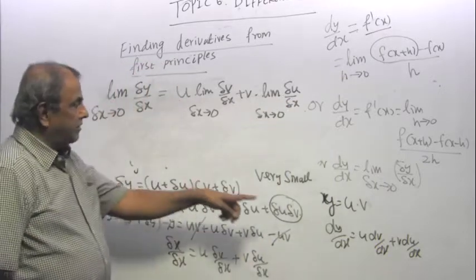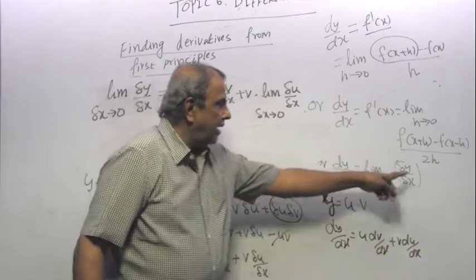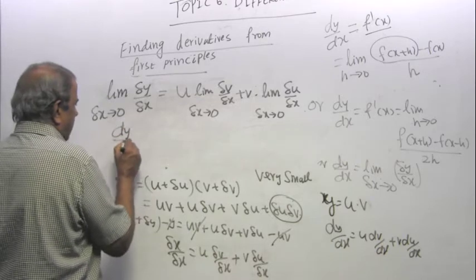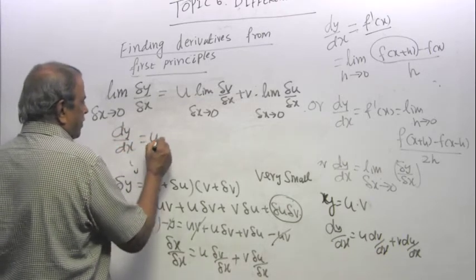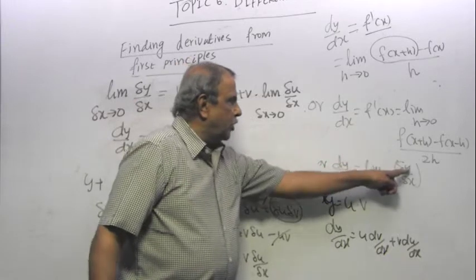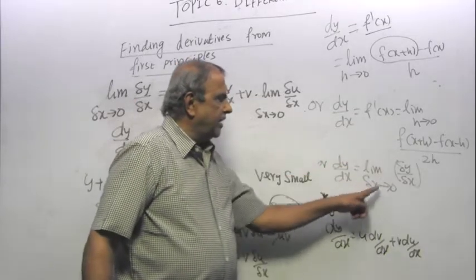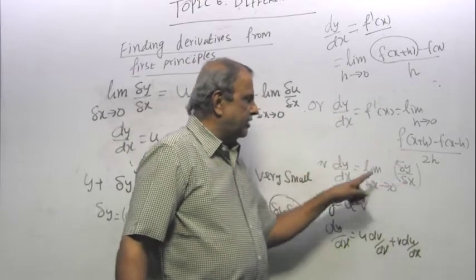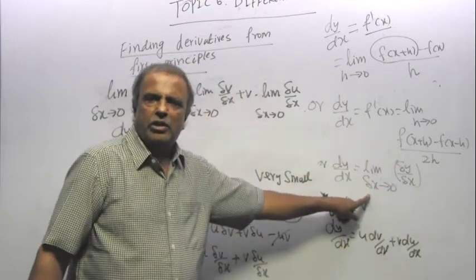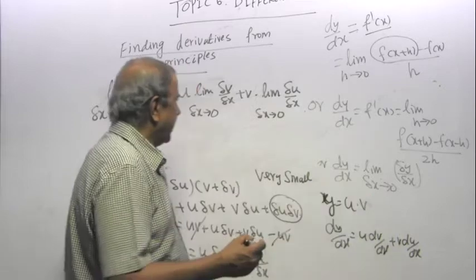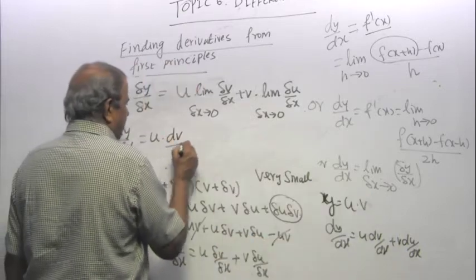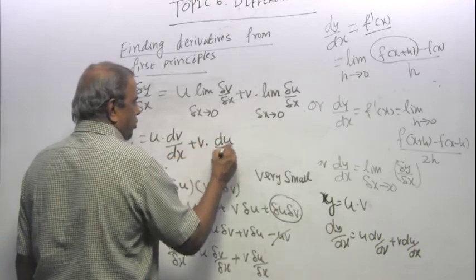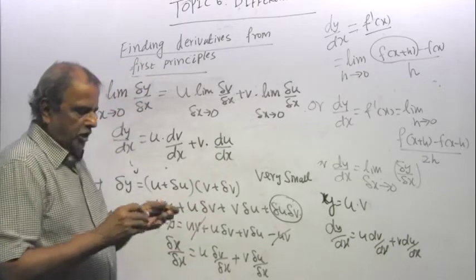So limit delta x tends to 0 is dy by dx equal to, using the same analogy, limit delta u by delta x as delta x tends to 0 is du by dx, limit delta v by delta x as delta x tends to 0 is u times dv by dx. So that is u times dv by dx plus v times du by dx. That is how you get the product rule.